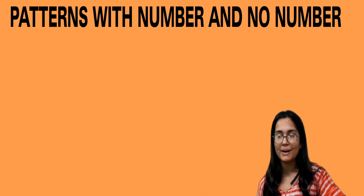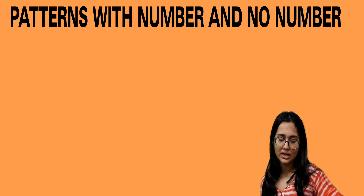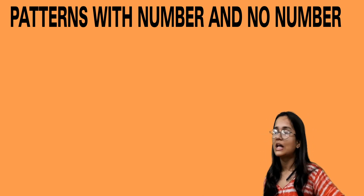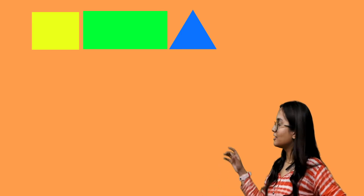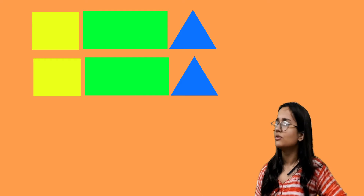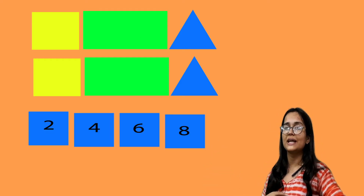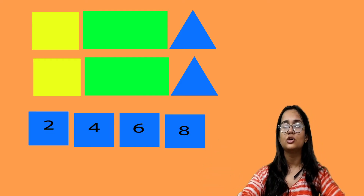You also need to create a pattern with numbers and without numbers. For a pattern without numbers, you can draw shapes like square, rectangle, triangle — square, rectangle, triangle again. With numbers, as in the example of 2, 4, 6, 8, you can similarly make any other pattern.